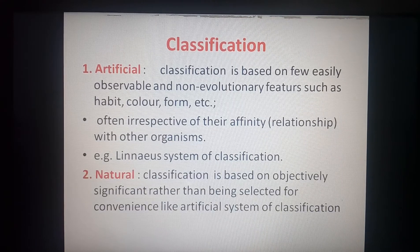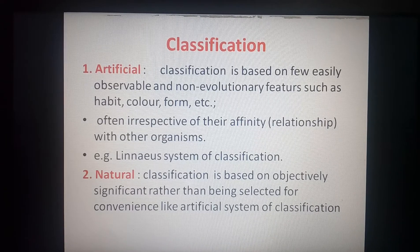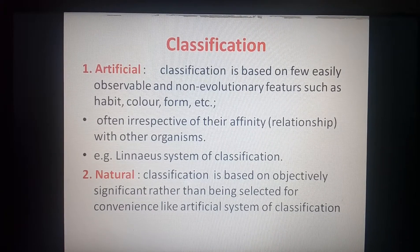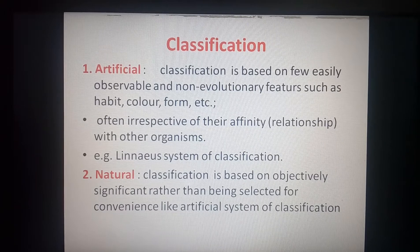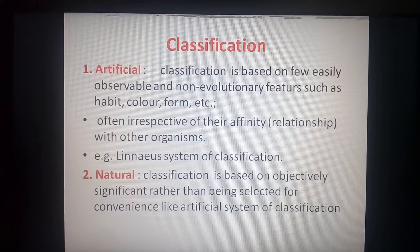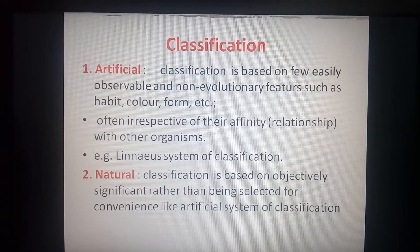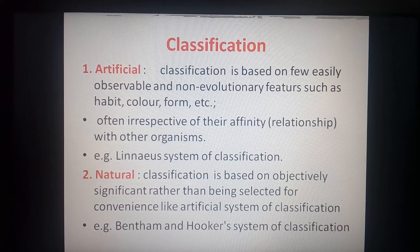The second type is the natural system of classification. This is based on objectively significant characters rather than being selected for convenience, unlike the artificial system. In the natural system of classification, convenient visible traits are not followed; instead, objectively significant features are taken into consideration to classify organisms. An example is Bentham and Hooker's system of classification.